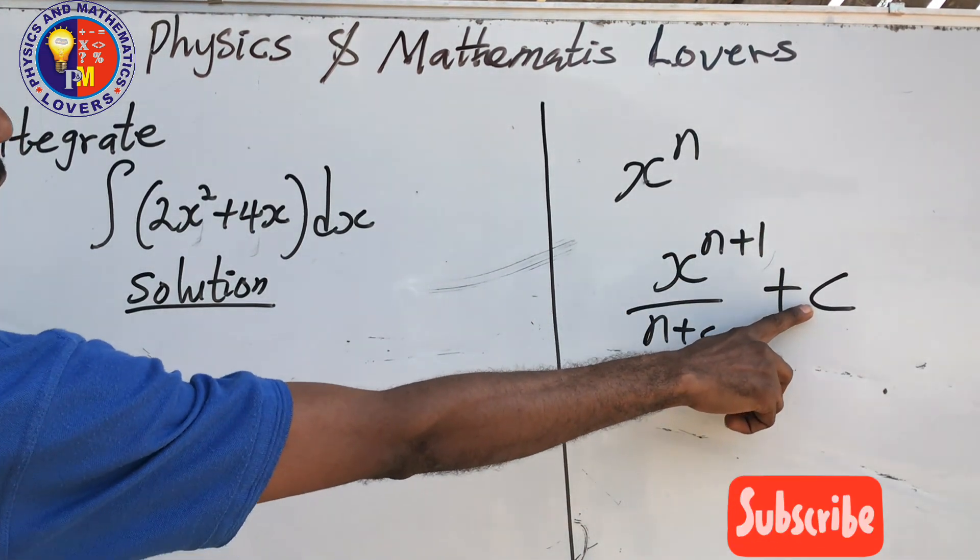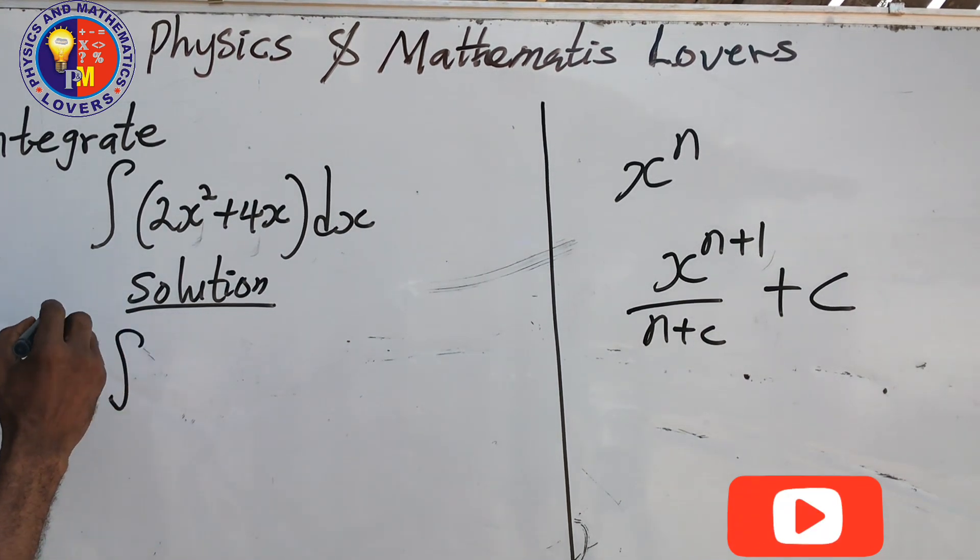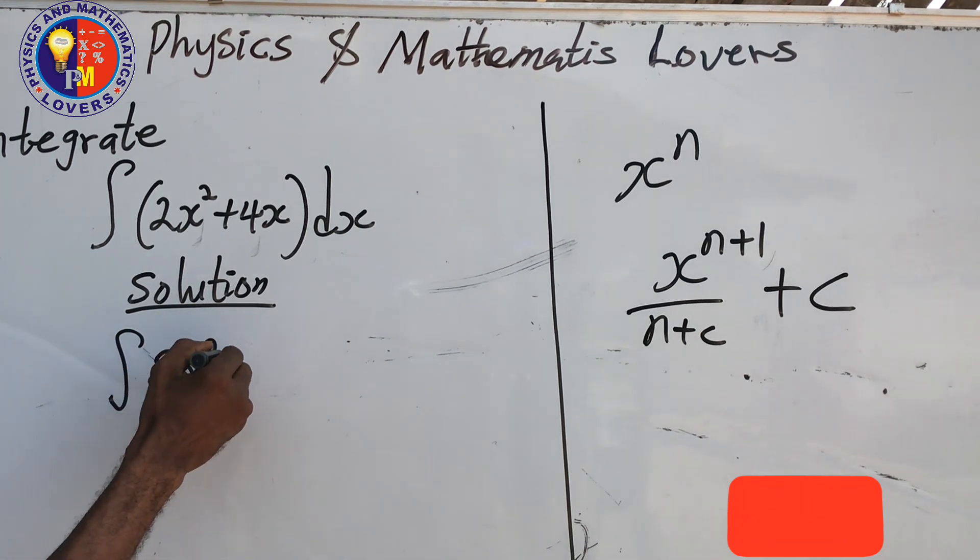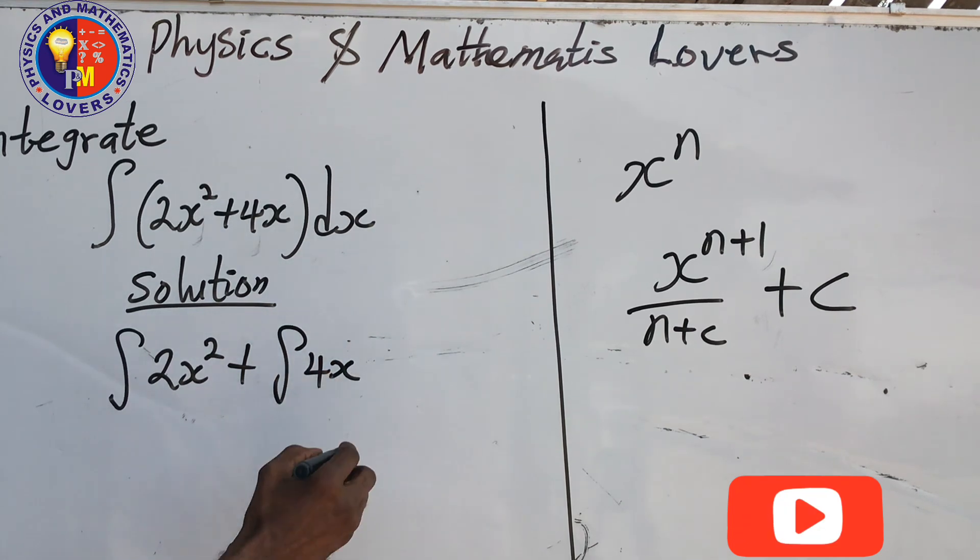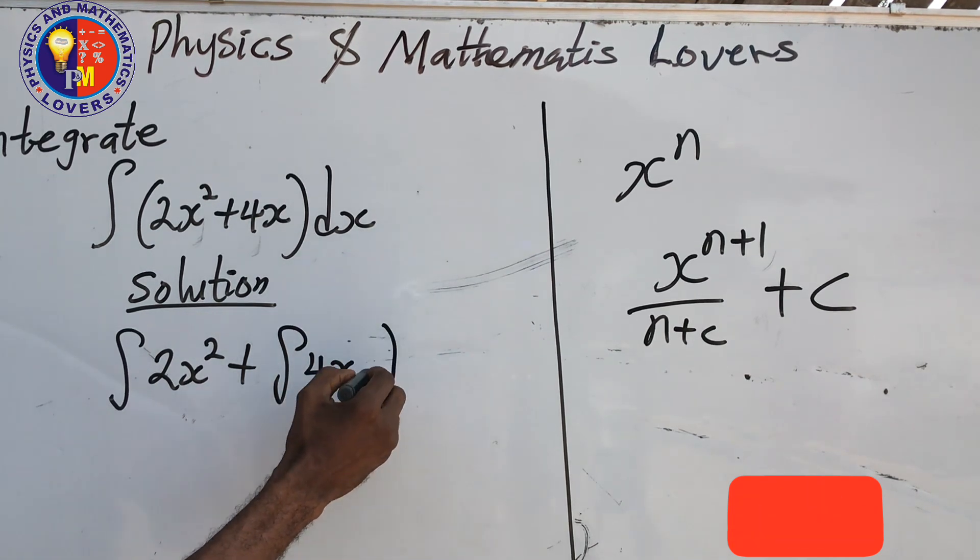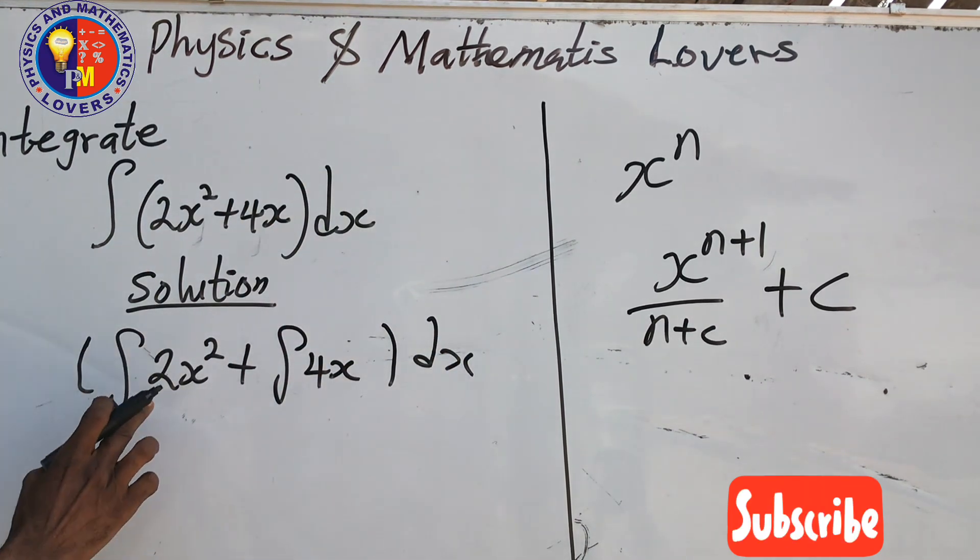At the end of the day, we are going to have a general constant that comprises all. In this case, we are going to have integral of 2x² plus integral of 4x dx. All of them have the dx that comprises all of them.